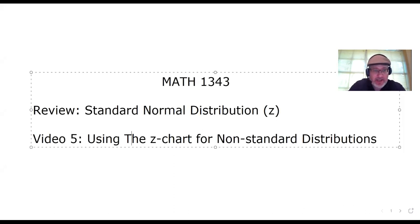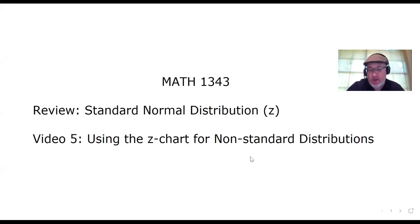We're going to wrap up this series of review videos by answering the question: what happens if we want to look up an area or calculate a probability using the Z chart, but the situation is not a standard normal distribution? Keep in mind that standard has a very specific meaning in this context. When you see standard, that specifically means that the mean is equal to zero and the standard deviation is equal to one.